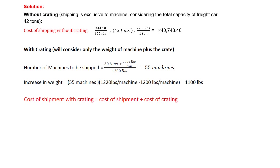Again, we consider the weight of the crate and the increase in weight it causes. The weight of the machine with the crate is 1,220 pounds per machine, minus 1,200 pounds per machine without crating, which gives 20 pounds per machine. Multiplied by 55 machines, this gives us 1,100 pounds as the total increase in weight.